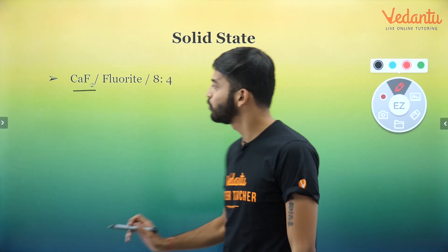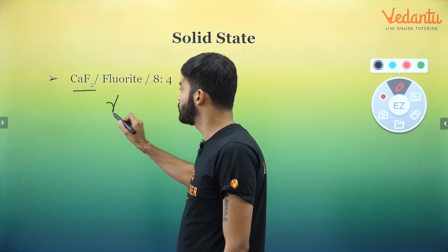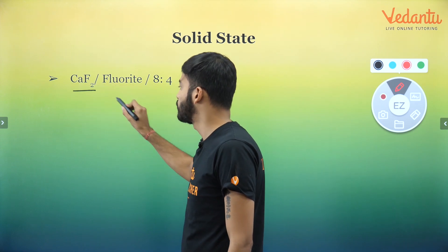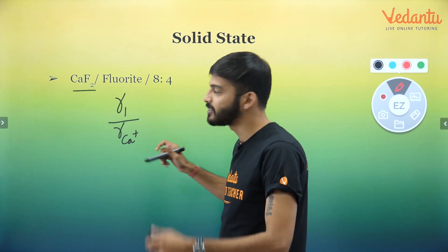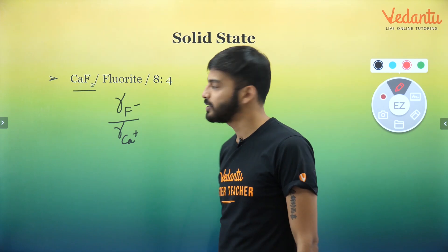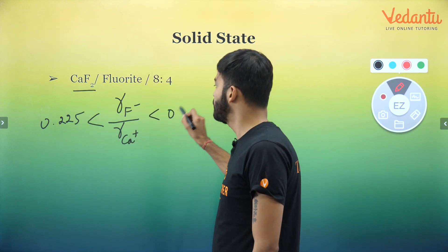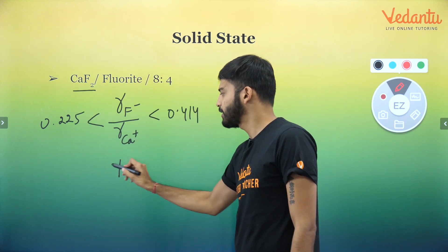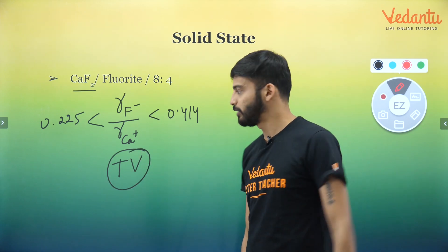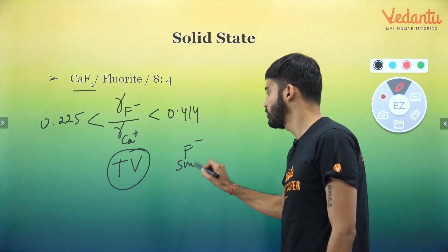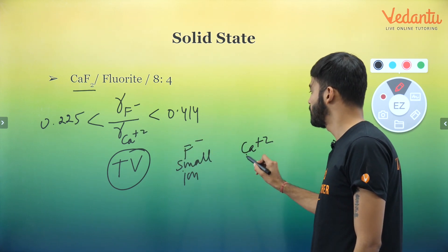In CaF₂, let's focus on the radius ratio r⁺/r⁻. What is important here is that your cation is actually bigger in size and the anion is smaller in size. The ratio is greater than 0.225 and less than 0.414, so it falls perfectly in the category of tetrahedral void. Here you will find the tetrahedral void. F⁻ is the smaller ion and Ca²⁺ is the large ion.